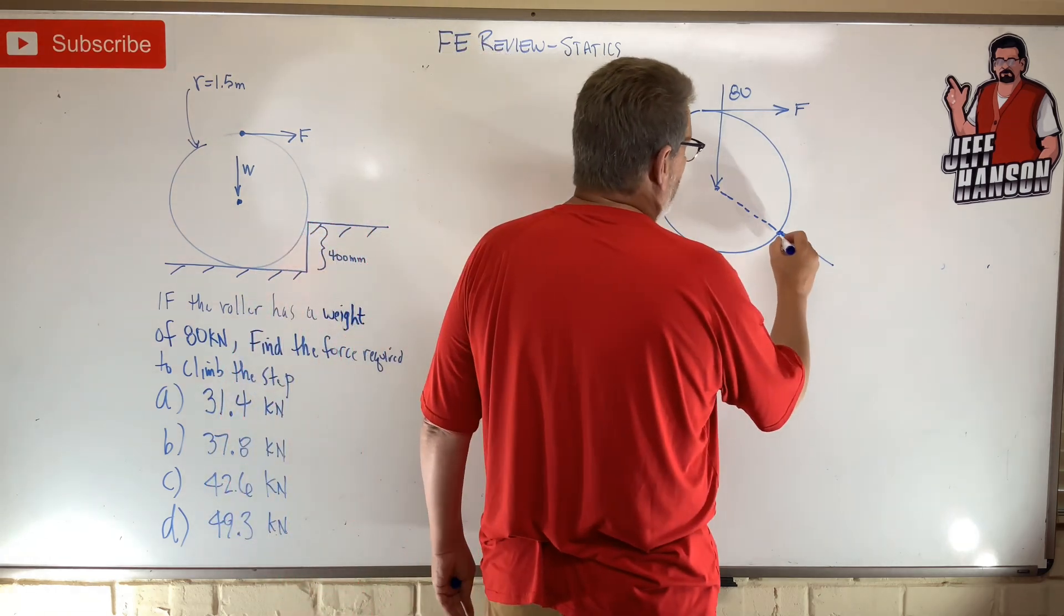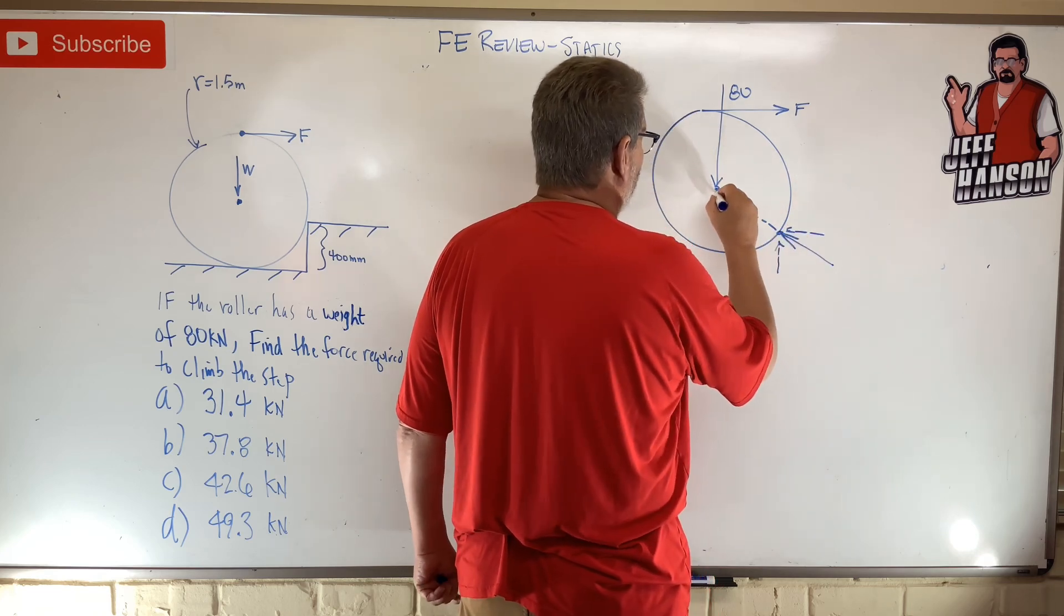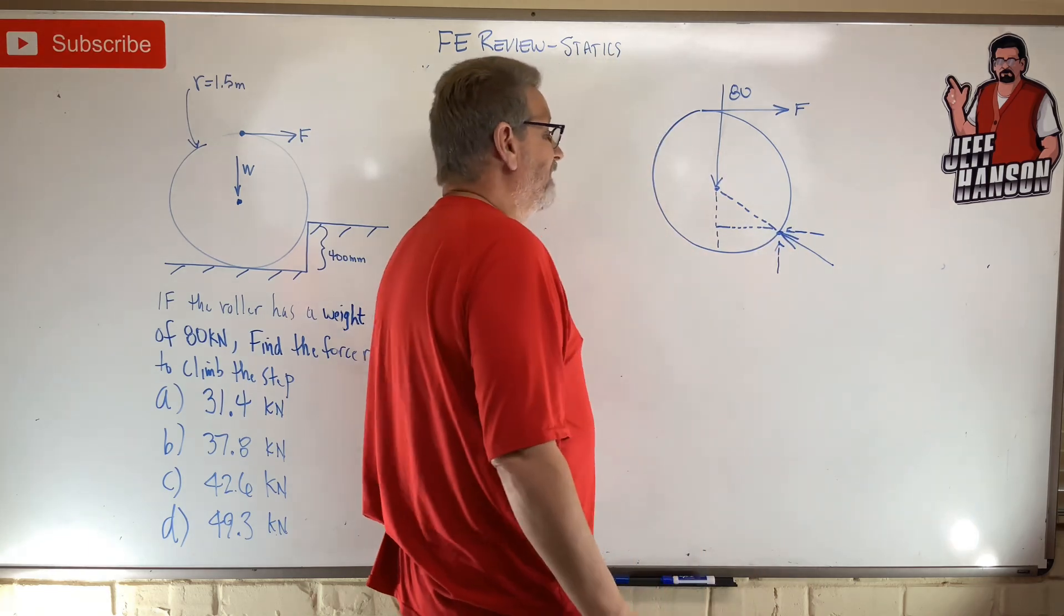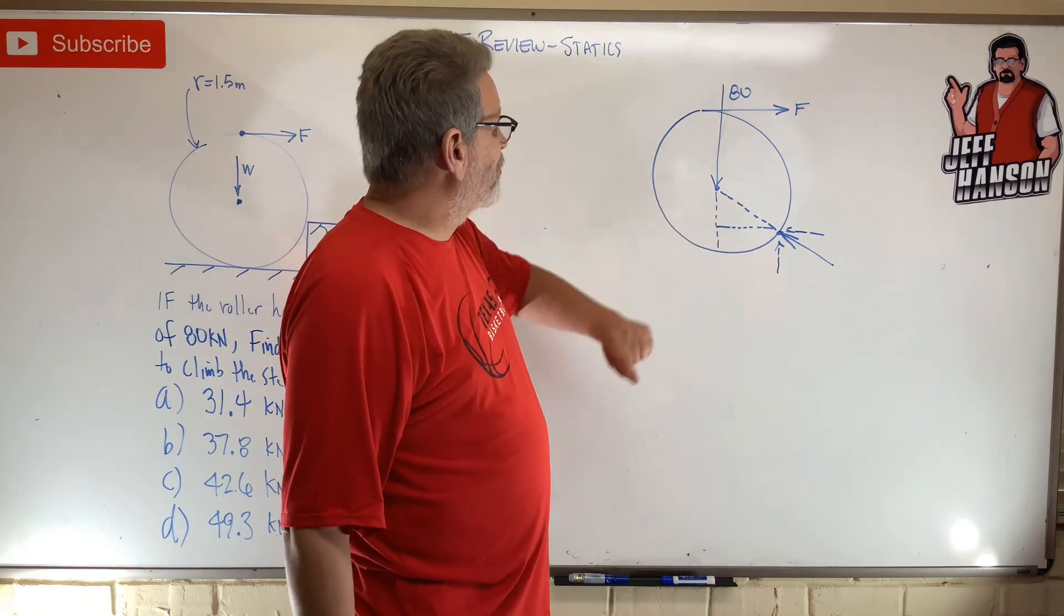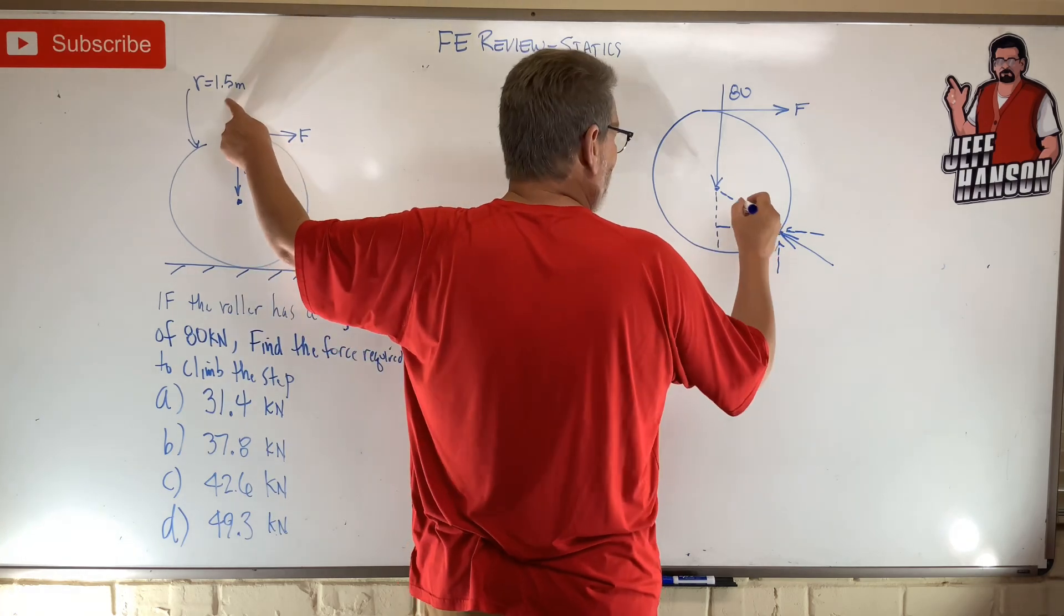So here's what I've got. This guy has two components over here, and I've got this. I need the dimensions of that triangle. Well, I know this, right? The radius is there.